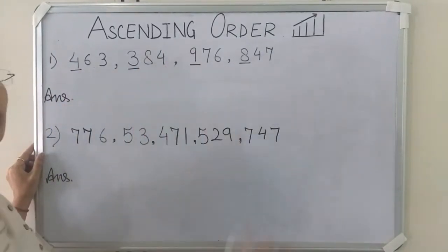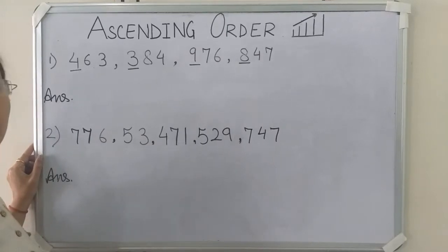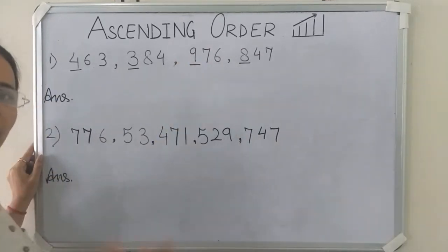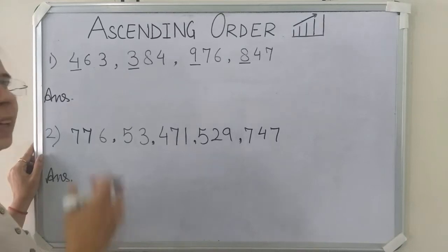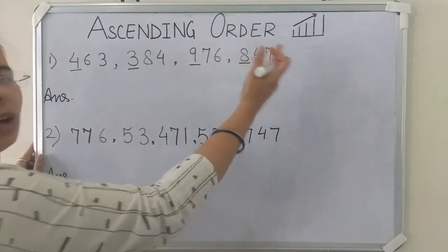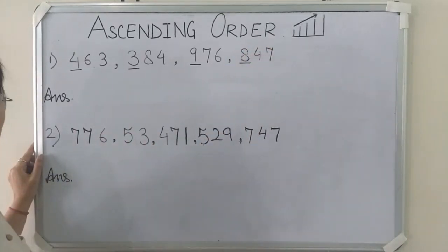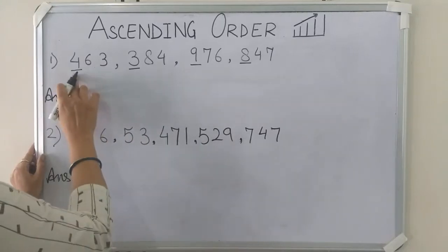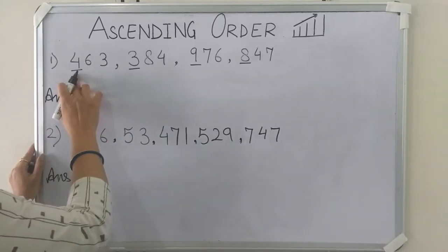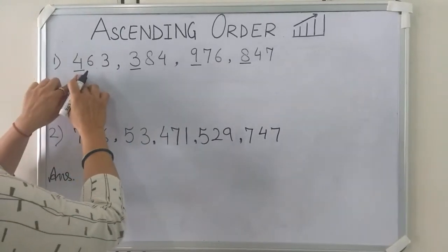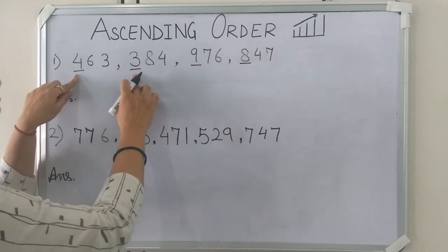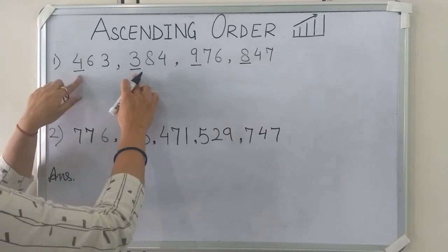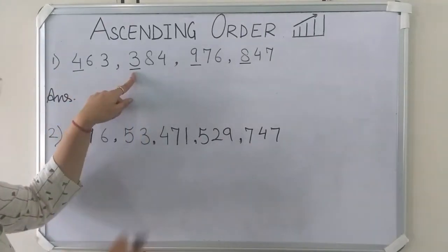Why are we comparing the hundreds place number? Because in a 3-digit number, the hundreds place is greater than the ones or tens place. So the first hundreds digit is 4. Is 4 smaller than 3? No. So we will skip 4 and take 3.